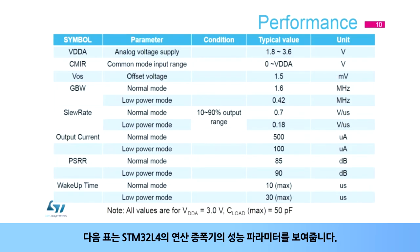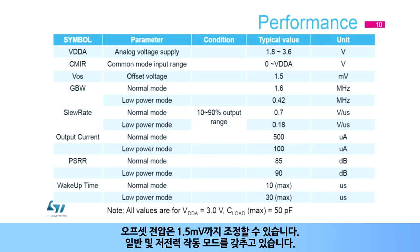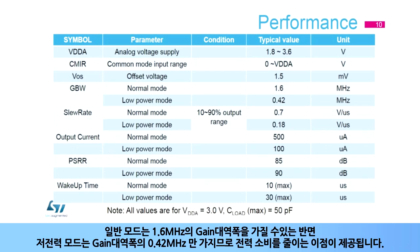The following table shows performance parameters for the STM32L4's op-amp. The op-amp can work from 1.8 to 3.6 volts from the VDDA supply with rail-to-rail input and output. The offset voltage can be calibrated down to 1.5 millivolts. It has normal and low-power operating modes: normal mode can have a gain bandwidth of 1.6 megahertz, while low-power mode only has 0.42 megahertz of gain bandwidth, but comes with the added benefit of reducing power consumption.